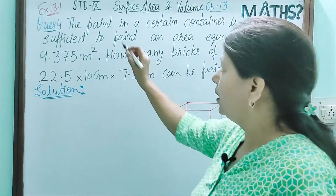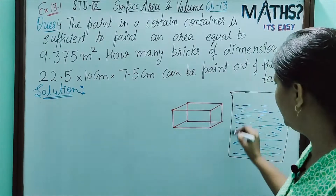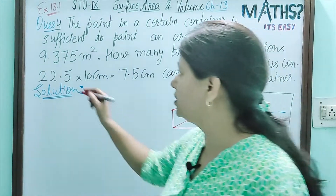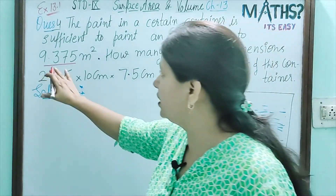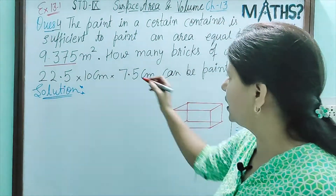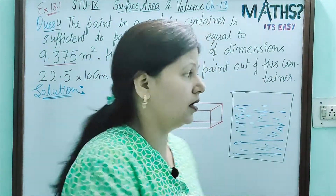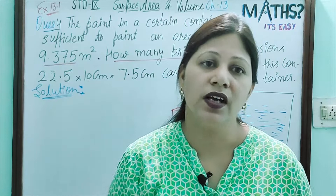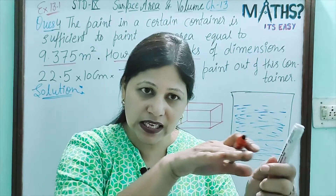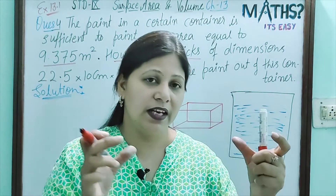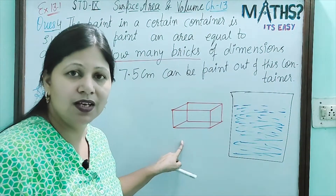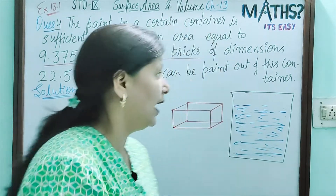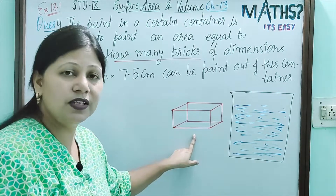Let us see question number 4 now. In this question, the paint in a certain container can paint an area of 9.375 metre square. The paint in the container can cover this much area. They are asking how many bricks can be painted using this paint. When we paint a brick, we paint all the outer surfaces — so we find the total surface area of the brick, since a brick has the shape of a cuboid.